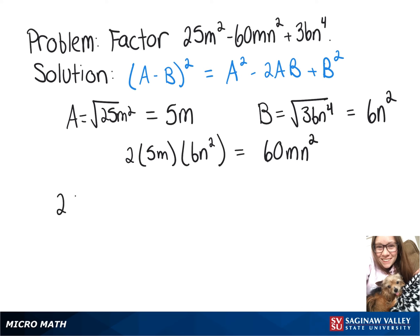So we can rewrite 25m squared minus 60mn squared plus 36n to the fourth as 5m minus 6n squared quantity squared.